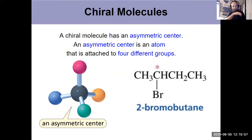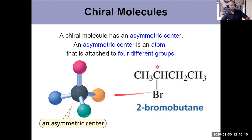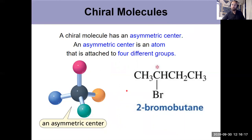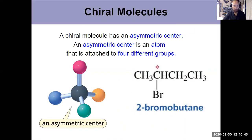An asymmetric center is the most common cause of chirality, but it's not the only one. A chiral molecule has at least one asymmetric center, and an asymmetric center is where we have a carbon atom attached to four different groups. Two-bromobutane, for example, has one asymmetric center. This carbon is attached to a hydrogen, a methyl group, an ethyl group, and a bromine — four different groups. So that is a chiral center, an asymmetric center, and two-bromobutane is a chiral molecule overall.